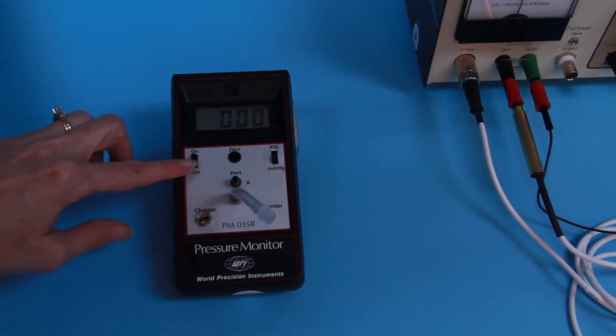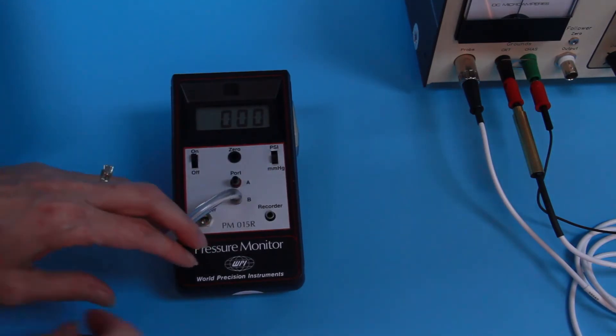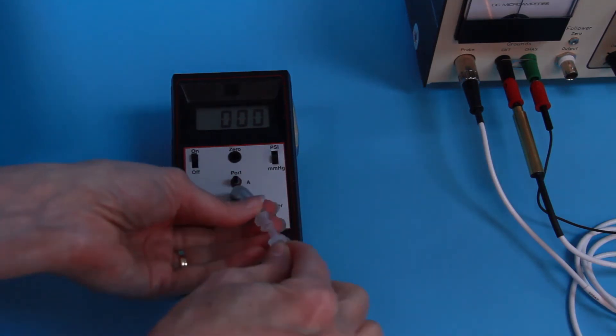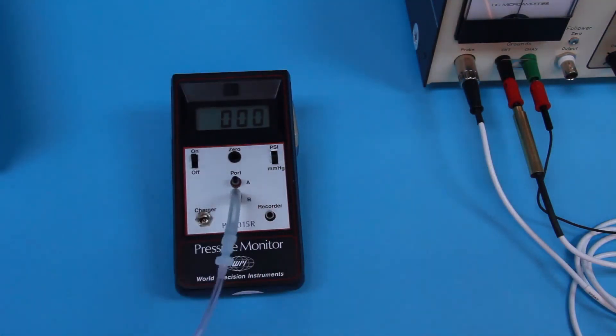Turn on the manometer and set the units switch to millimeters of mercury. Connect the output of the pressure source to port B on the meter to monitor the pressure. Regulate the pressure up or down until the manometer reads approximately 350.